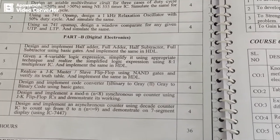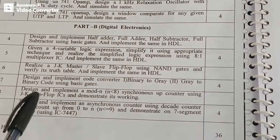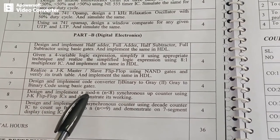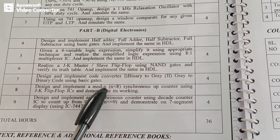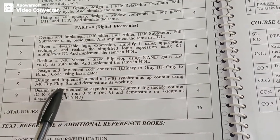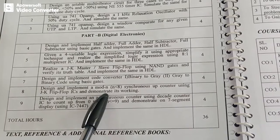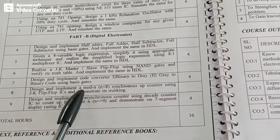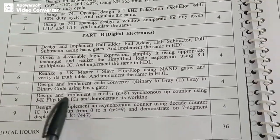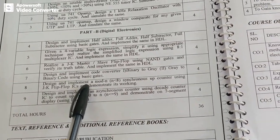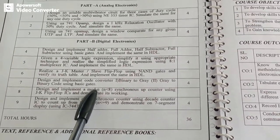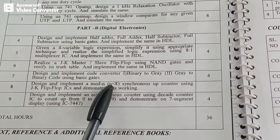Welcome to AD Lab. Today we will design the 8th experiment: design and implement mod-n, where n is less than 8, synchronous up counter using JK flip-flop IC and demonstrate its working. The value of n is less than 8, so you can design a counter for any value less than 8. In our case, we will design a mod 5 counter, that is n equals 5.